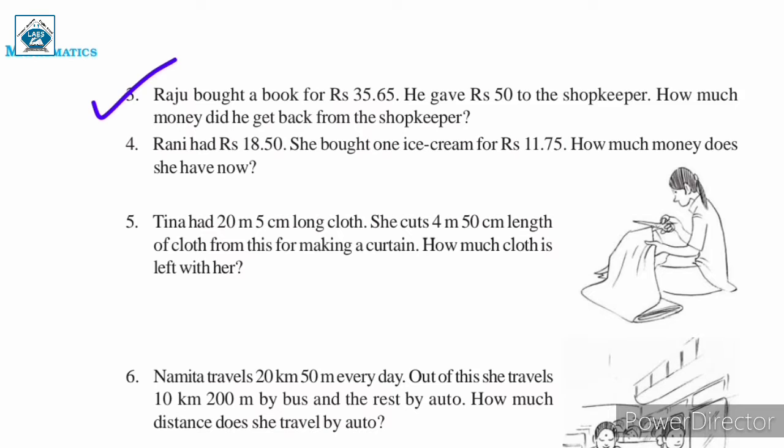Raju bought a book for Rs. 35.65. He gave Rs. 50 to the shopkeeper. How much money did he get back from the shopkeeper? In this question, Raju bought a book and the cost of the book is Rs. 35.65.